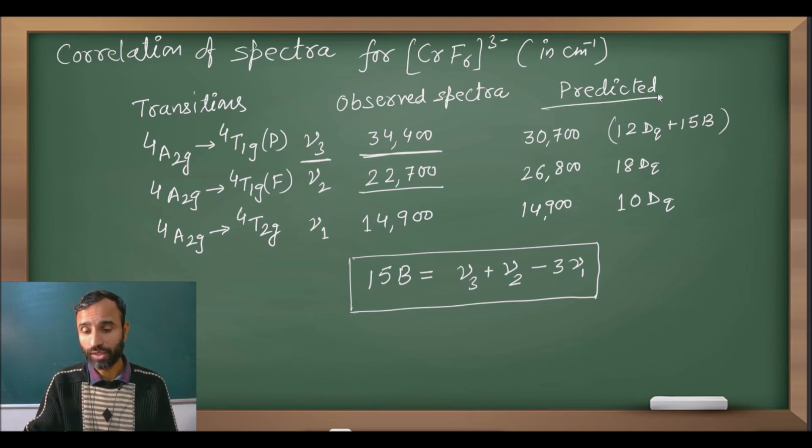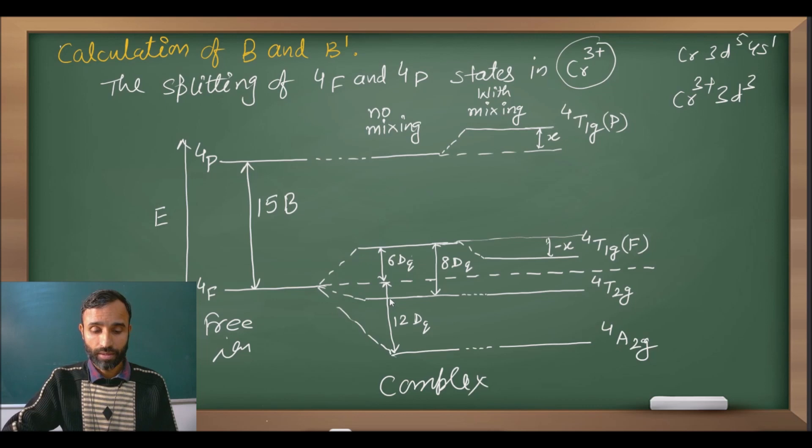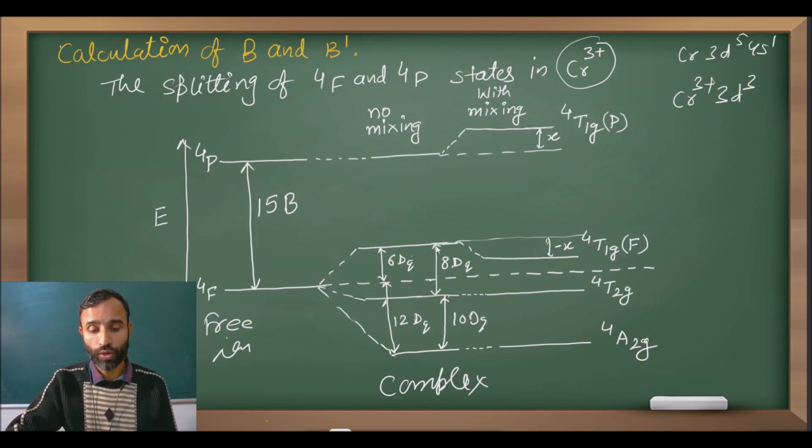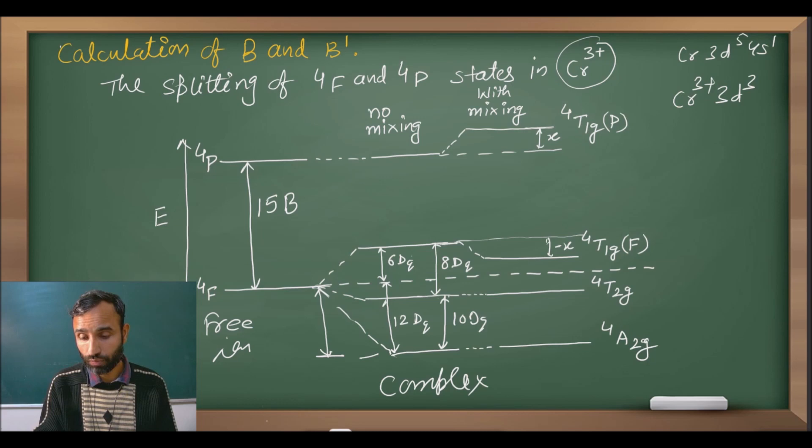Without mixing, the predicted value: there is a difference between 4A2g to 4T2g. From 4A2g to 4T1g(P) and there is no mixing considered, then it is 10 plus 8, means total 18 Dq. And last one from, this is 15B, and from 4A2g to 4T1g(F), so this value is actually 12Dq.